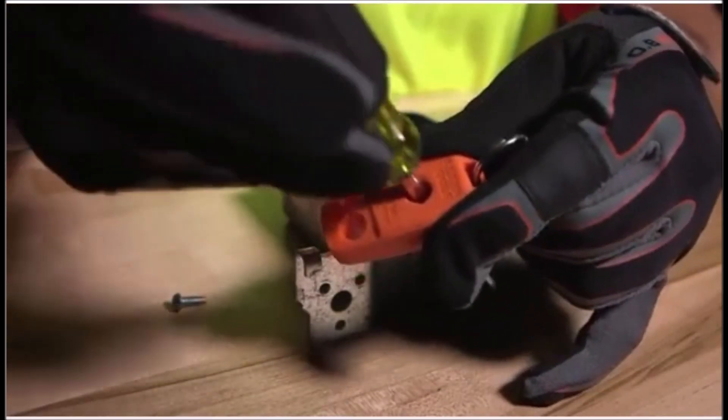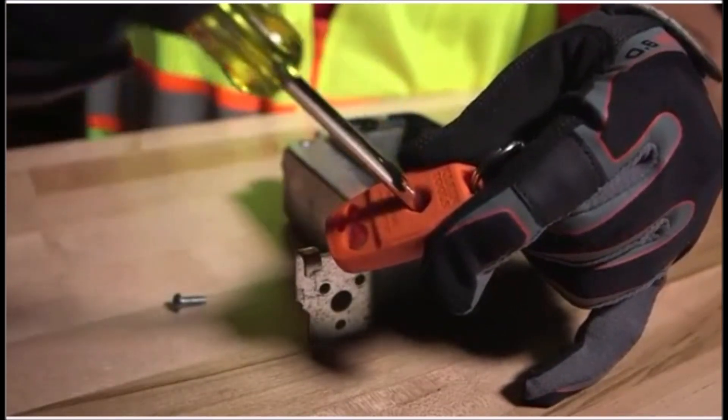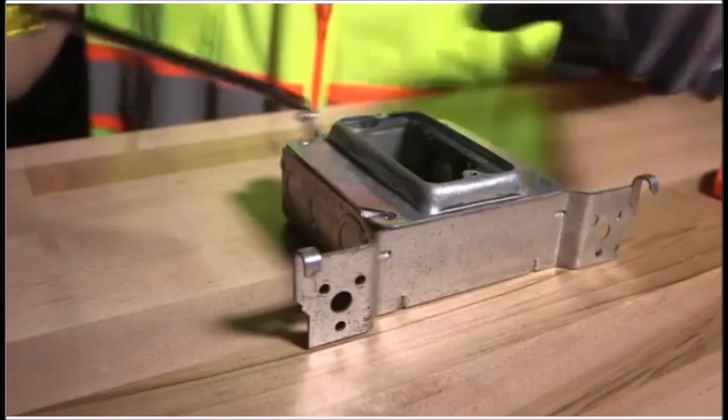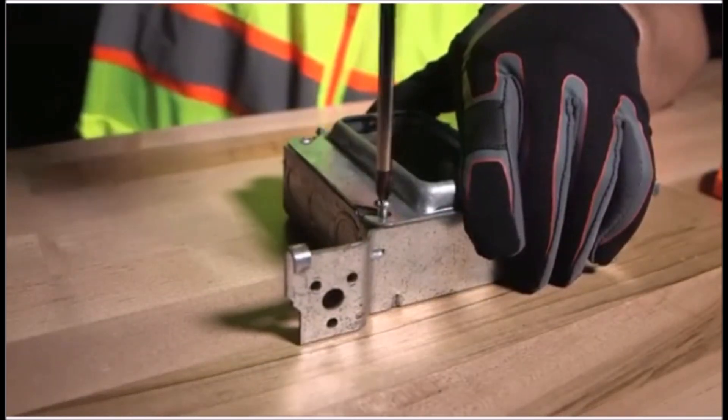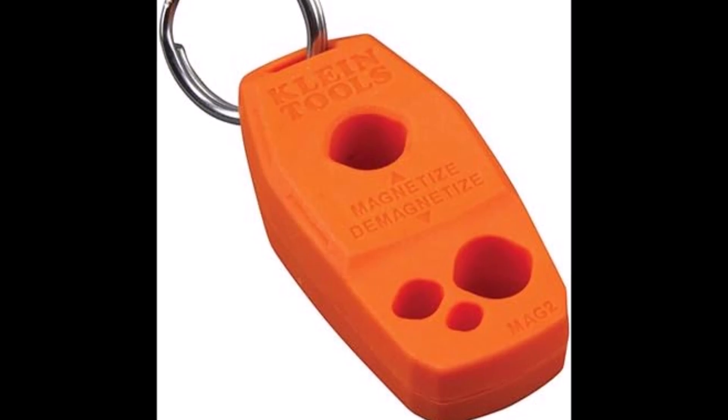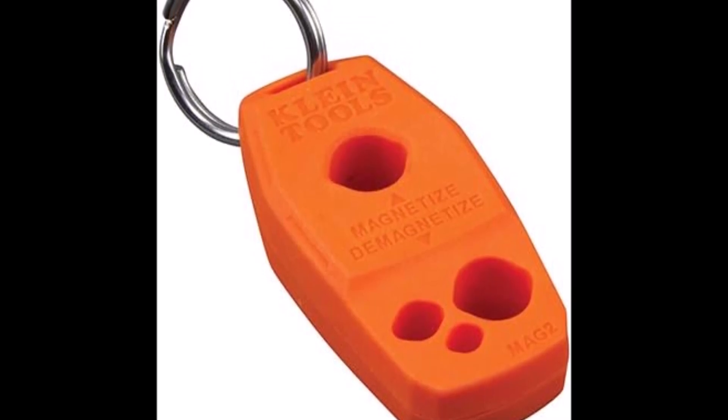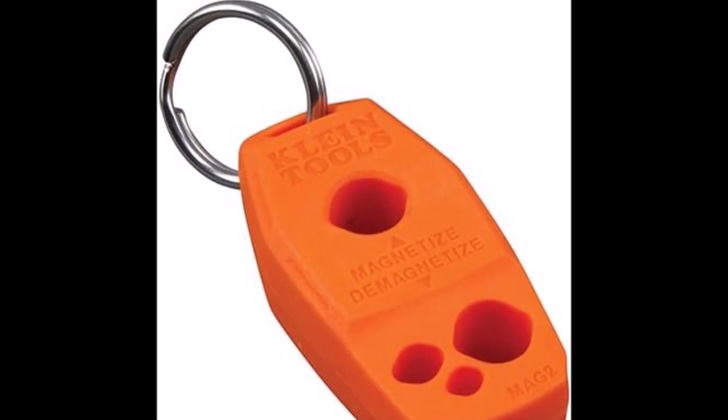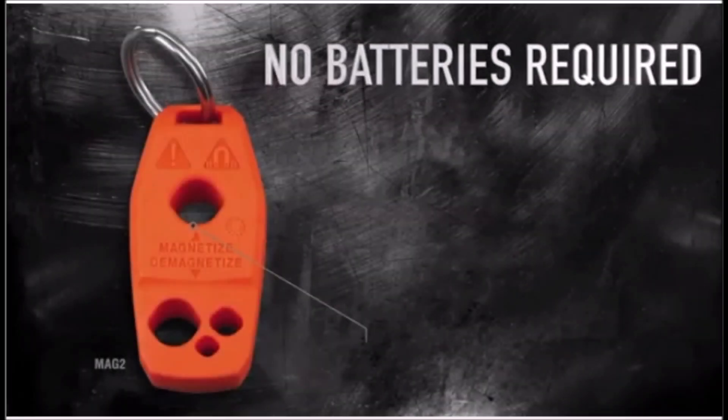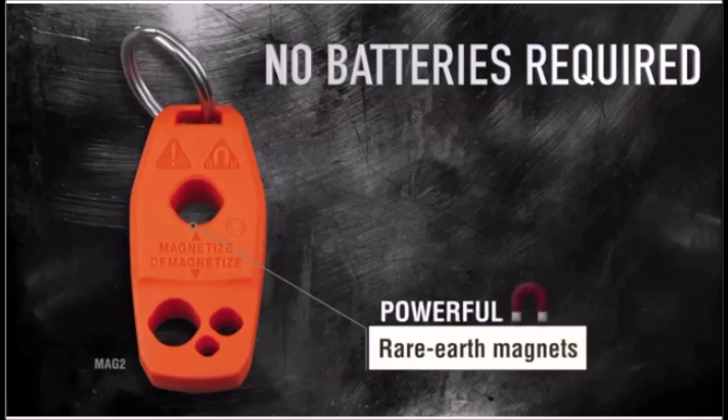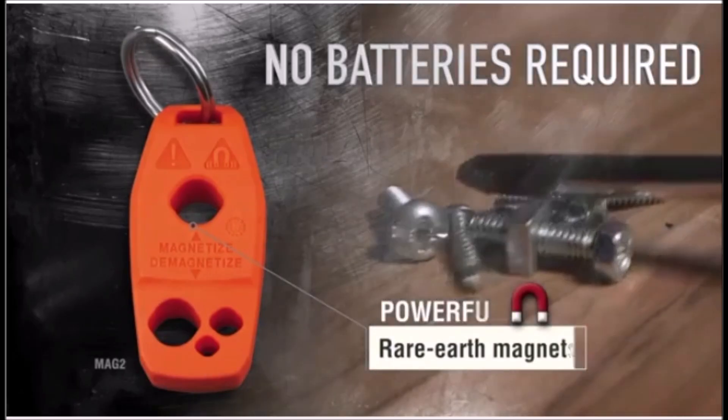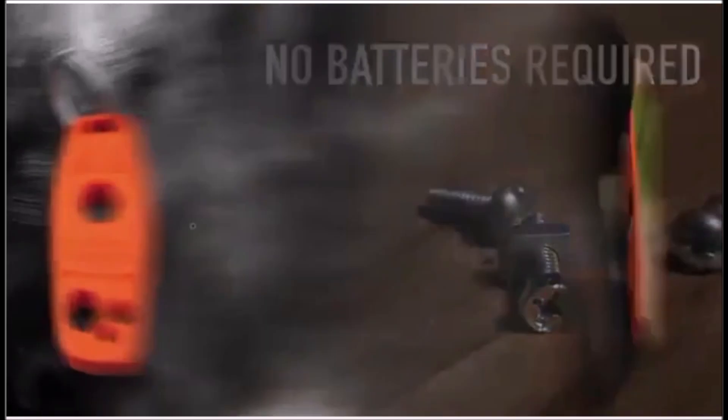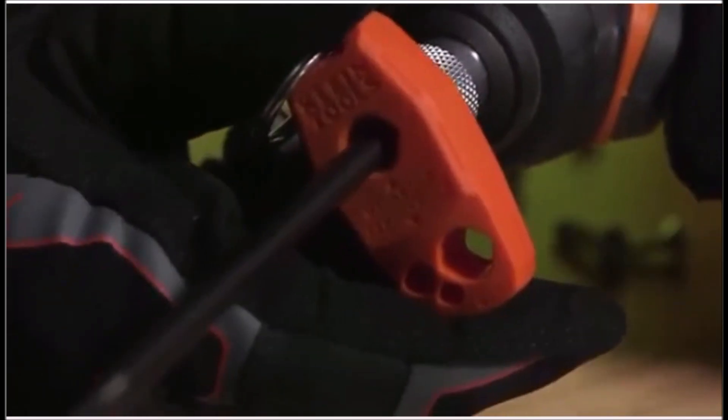Number three. The Klein Tools MAG2 Magnetizer and Demagnetizer is a simple tool that adds real convenience to everyday work. With one quick swipe, it makes screwdriver tips magnetic, helping screws stay attached while working in tight or awkward spaces. It also removes magnetism just as easily, which is useful when working near sensitive electronics. The tool works with most screwdriver types, including precision bits, slotted, and Phillips heads.